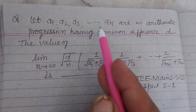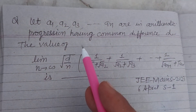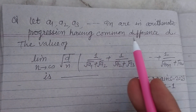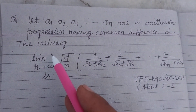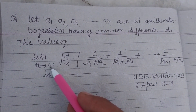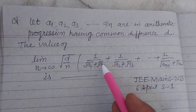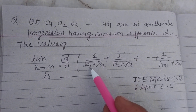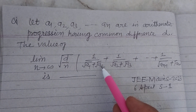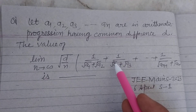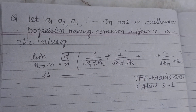Let A1, A2, A3, ... AN be in arithmetic progression having common difference d. Find the value of limit n tends to infinity of root d over n, multiplied by the sum: 1 upon (root A1 plus root A2) plus 1 upon (root A2 plus root A3) and so on.